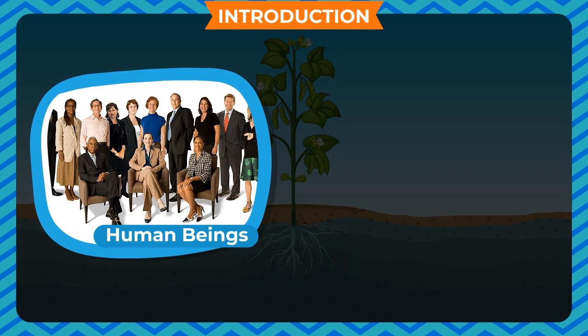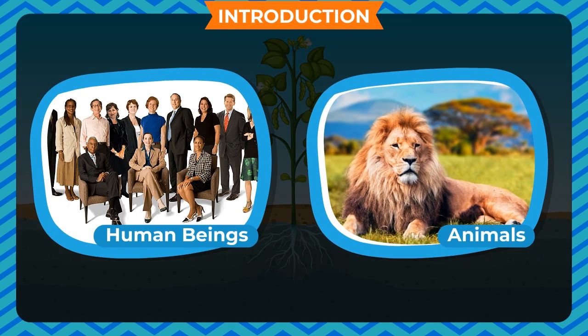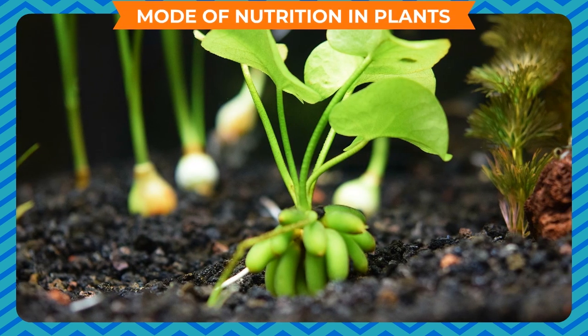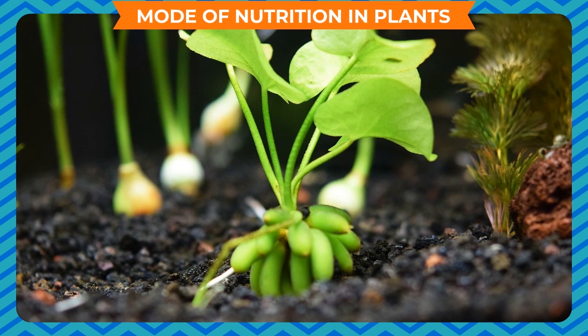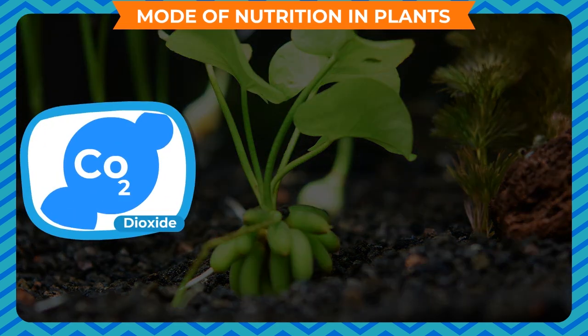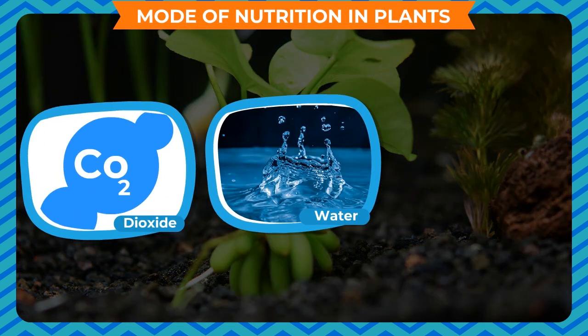Plants can make their food themselves, but human beings and animals depend on plants for food. They also depend on some animals that eat plants, so they directly or indirectly depend on plants. Mode of nutrition in plants: green plants are able to make food for themselves by using carbon dioxide, water, and minerals, which are already present in their surroundings.